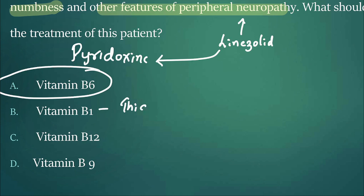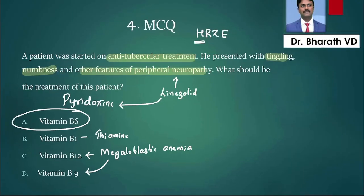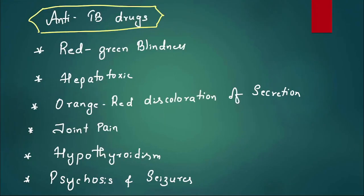Vitamin B1 is thiamine. Thiamine is used in alcohol withdrawal patients, particularly having Wernicke-Korsakoff psychosis. B12 - we give it in megaloblastic anemia, not only that, we use it in neuropathy conditions, particularly diabetic neuropathy. Benign is nothing but folic acid, which we can also use for megaloblastic anemia.